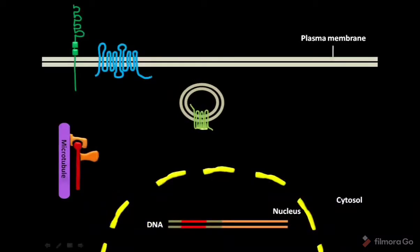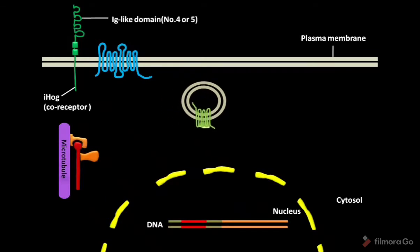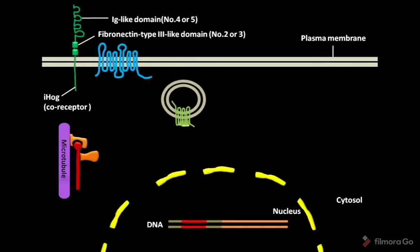In a Drosophila cell, transmembrane protein IHOG has 4 or 5 immunoglobulin-like domains and 2 or 3 fibronectin-type-3-like domains.